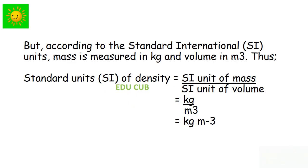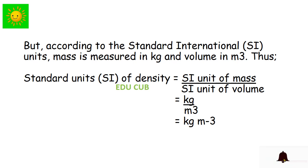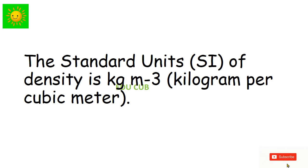According to Standard International units, mass is measured in kilograms and volume is measured in cubic meters. So the standard unit for density is obtained by dividing kilograms by cubic meters. The standard unit of density is kilogram per cubic meter (kg/m³).